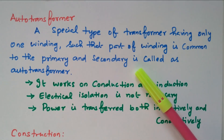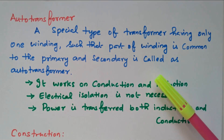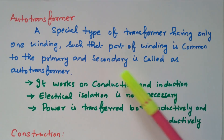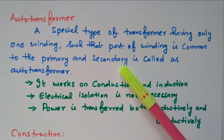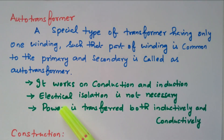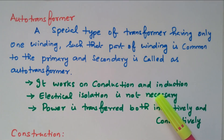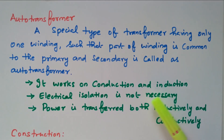Normally in a two-winding transformer, we have a primary winding and a secondary winding — two different windings are available. But in the auto transformer, we have only one winding; part of it is used as primary and part as secondary. It works on both conduction as well as induction — mutual inductance principle as well as the conduction principle.